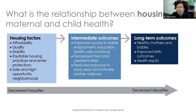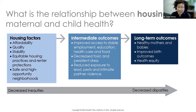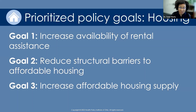This diagram shows the relationship between housing and maternal and child health outcomes. Research finds that having a safe, affordable, and stable place to live leads to better health outcomes for moms, babies, families, and communities. Housing location and access is related to better access to education and employment, less exposure to intimate partner violence, and a reduction in toxic and persistent stress, which leads to better birth outcomes and maternal health. The three housing goals are to increase availability of rental assistance, reduce structural barriers to affordable housing such as renter discrimination and exclusionary zoning, and to increase affordable housing supply.